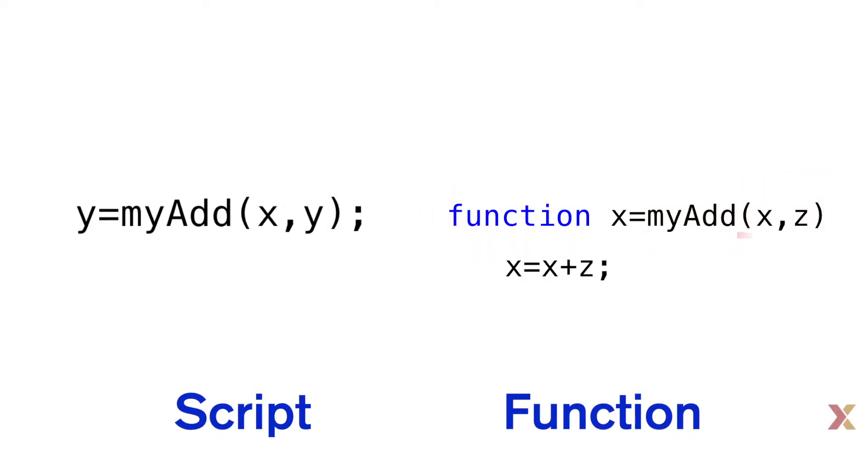MyAdd is the name of the function. It takes two inputs which it stores in x and z. MyAdd gives one output. The script will take the output and store its value in y.